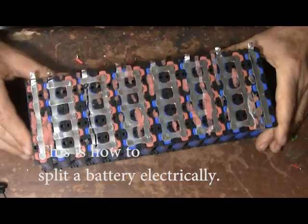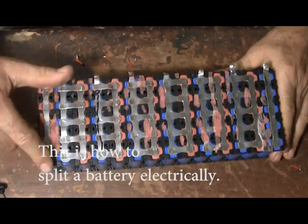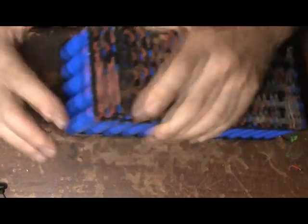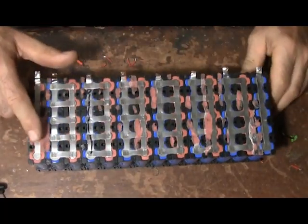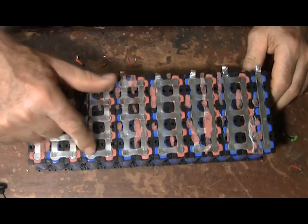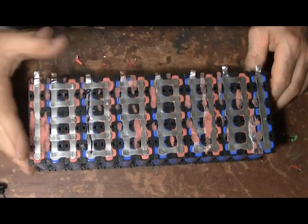Here we have a 5P 14S battery. 5P, 5 cells wired in parallel: 1, 2, 3, 4, 5, and 14 cells wired in series: 1, 2, 3, 4, 5, 6, 7, 8, 9, 10, 11, 12, 13, 14.